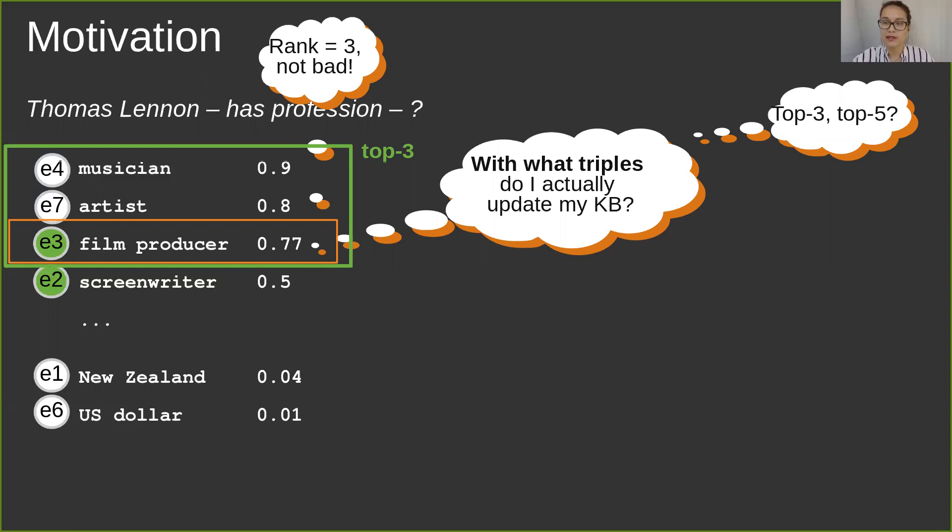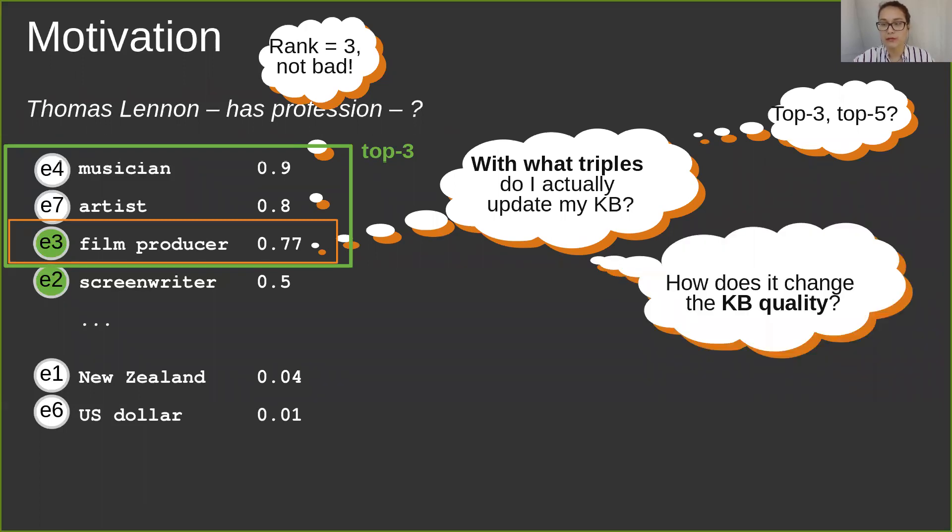The decision is obviously imperfect since we would incorporate incorrect facts into the knowledge base as well. How can we then quantify and measure the quality of these completions? The rank does not provide this information directly.